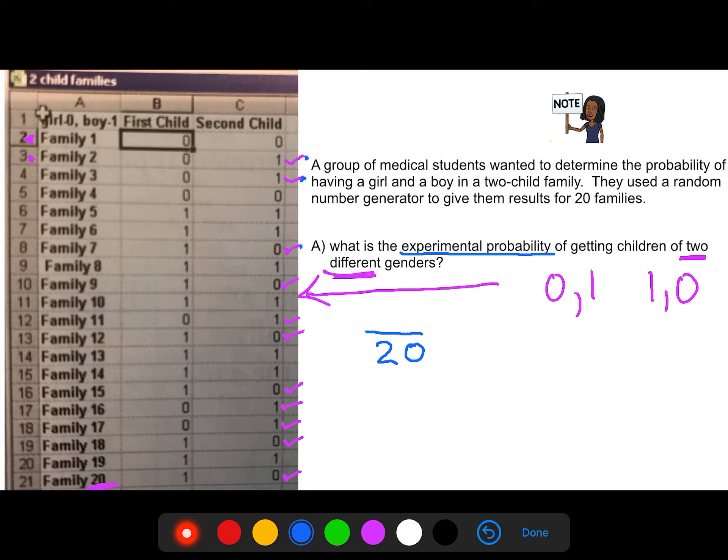Just checking off all the ones that are different, that are either one, zero, or zero, one. So now, how many is that? Out of the 20 families, we have one, two, three, four, five, six, seven, eight, nine, ten, eleven. So now, out of the 20 trials in this experiment, we have 11. 11 out of 20. That's our experimental probability.